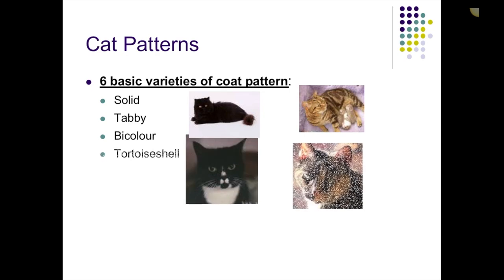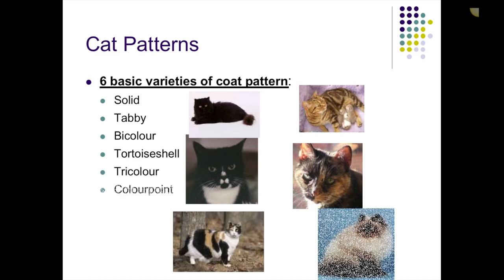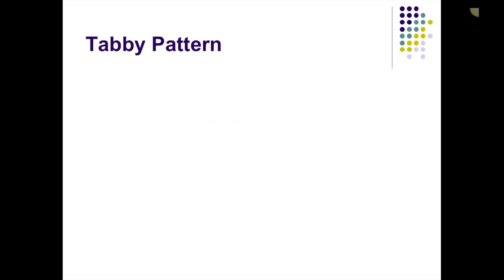We have six basic varieties of coat pattern: solid — which can be solid black, solid white, or solid brown; tabby; bicolor; tortoiseshell; tricolor, also called calico; and color points. Most animals when they're solid color can be solid black or solid white, but most otherwise are either ticked or tabbied in some form when they have red coloring.